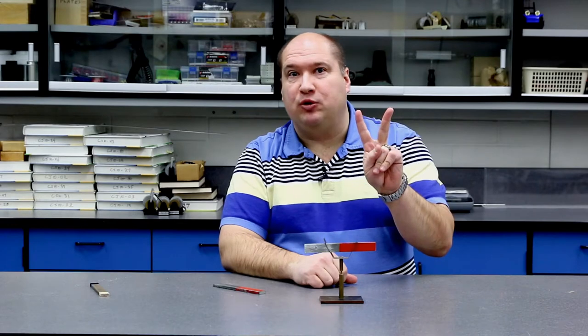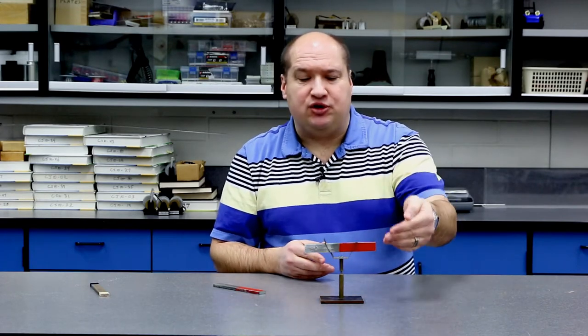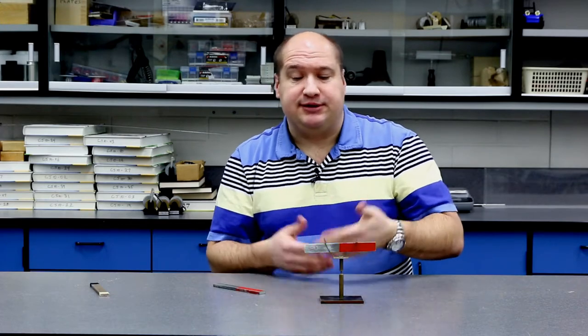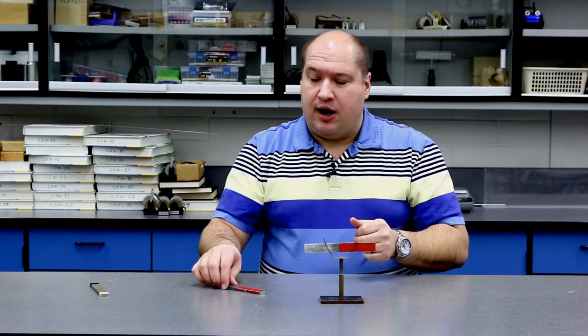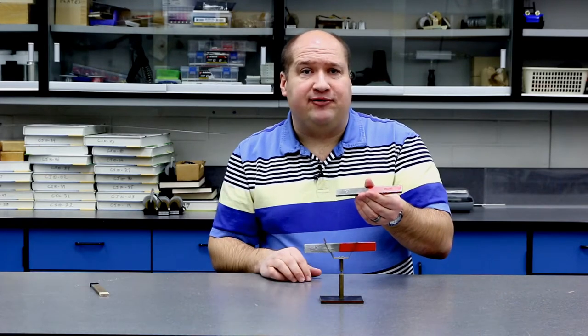Every magnet has two poles, north and south. So it is true for this magnet. It's got a north pole that's colored red and a south pole that's not colored or just silver. It's also true for this magnet, north pole and a south pole, and the behaviors are something that you're probably familiar with.